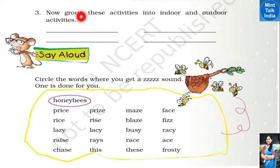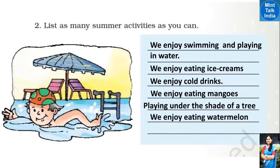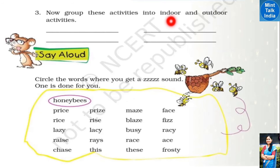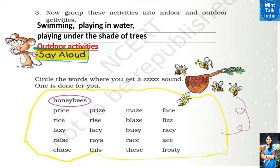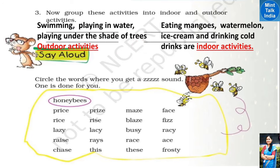Question number 3: Group these activities into indoor and outdoor activities. Outdoor activities: swimming, playing in water, and playing under the shade of a tree. Indoor activities: eating mangoes, watermelon, ice creams, and cold drinks — things we do inside our home.